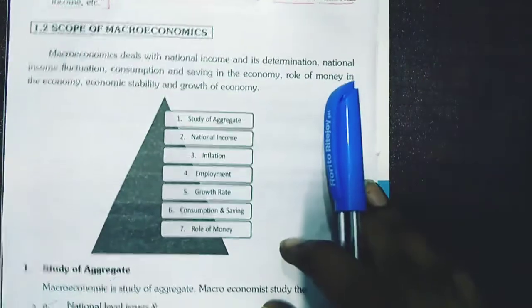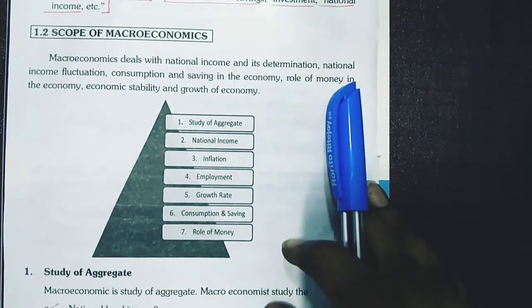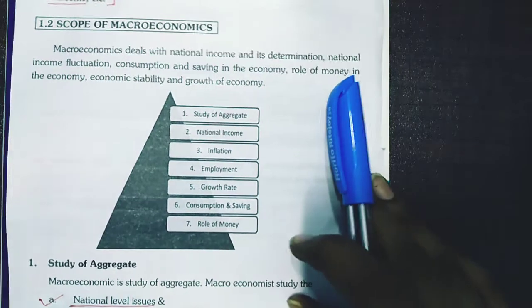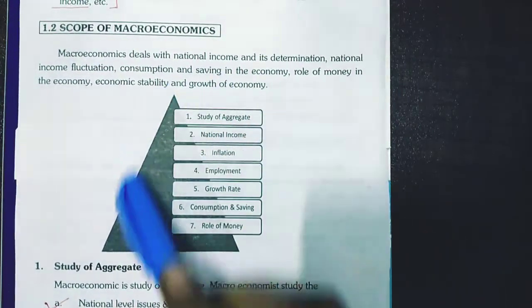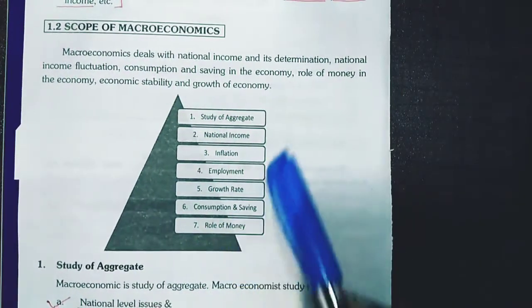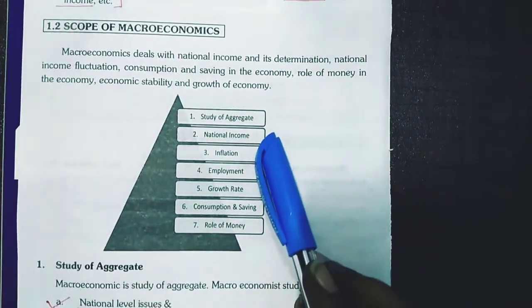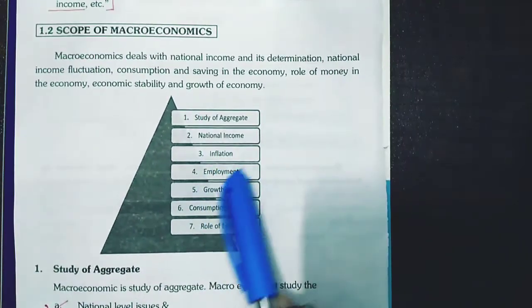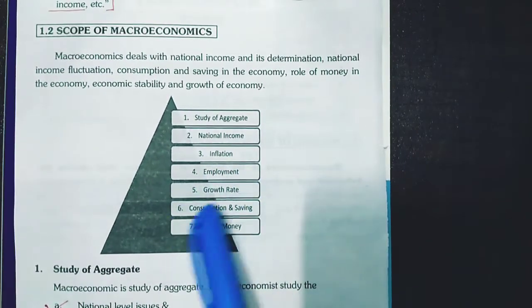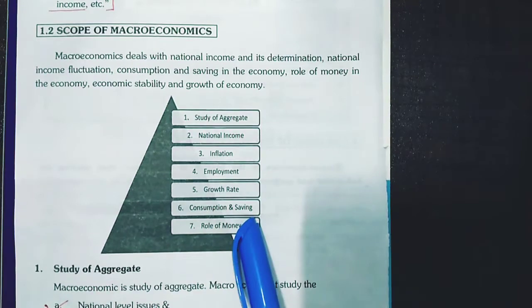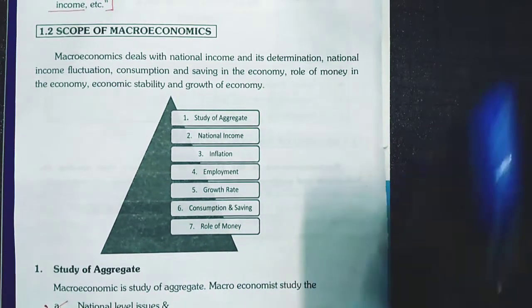The scope of macroeconomics covers seven points: study of aggregate, national income, inflation, employment, growth rate, consumption and saving, and role of money.